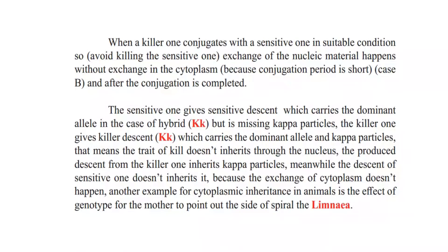When a killer conjugates with a sensitive one under suitable conditions to avoid killing the sensitive one during reproduction, exchange of nucleic material happens without exchange of cytoplasm, because the conjugation period is kept short (case B). After conjugation is completed, the sensitive one gives sensitive descendants carrying the dominant allele in hybrid form but missing kappa particles. The killer one gives killer descendants carrying the dominant allele and kappa particles. That means the trait of killing does not inherit through the nucleus — descendants of the killer inherit kappa particles, while descendants of the sensitive one do not, because cytoplasmic exchange does not happen. So the dominant K alone is not enough to be killer.